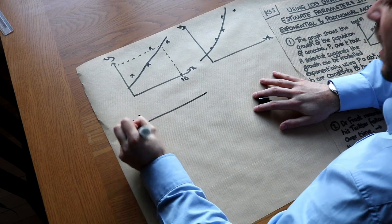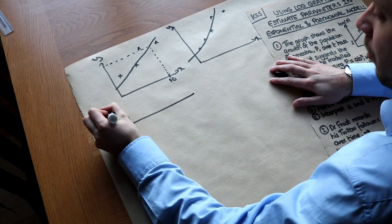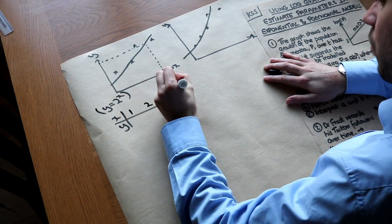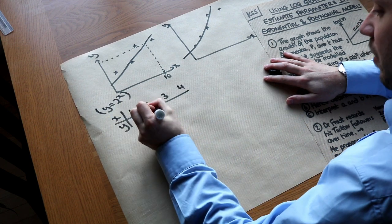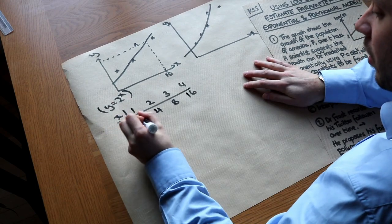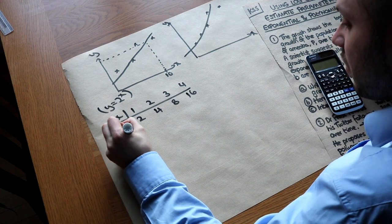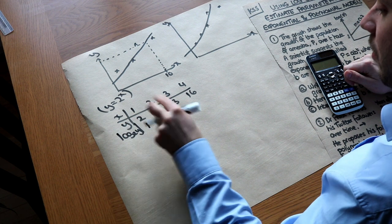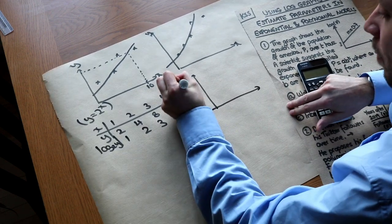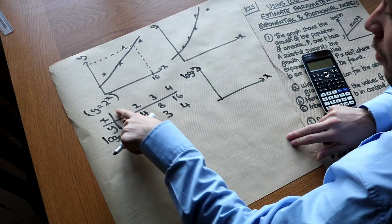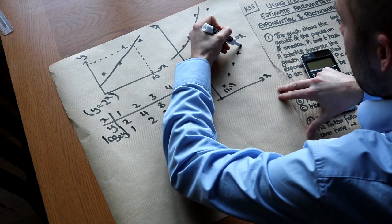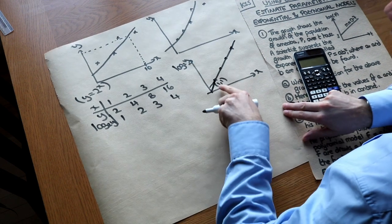Suppose we had points which exactly gave an exponential model — say y equals 2 to the x. For x values 1, 2, 3, 4, we get y values 2, 4, 8, 16. If we then log these y values using log base 2, we get 1, 2, 3, 4. Plotting log base 2 of y against x gives points (1,1), (2,2), (3,3), (4,4), and this exponential model has turned into a linear model — the exponential curve becomes a straight line.